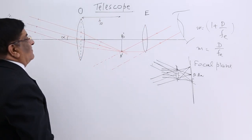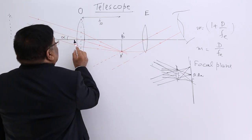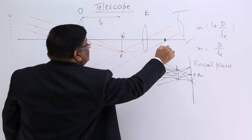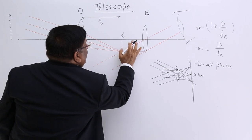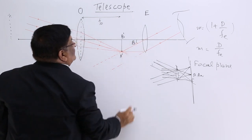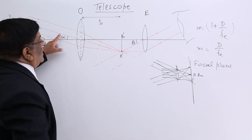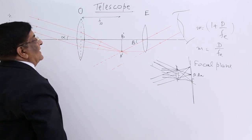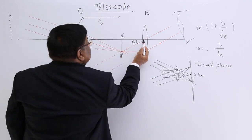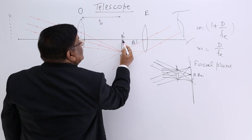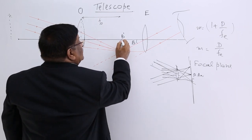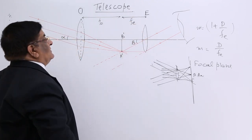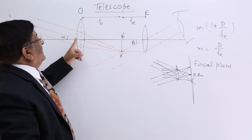Now, the angle subtended by the same image on our eyes — one ray comes from the bottom of the object and goes to our eyes, and this angle subtended by the image on the eyes we call beta. If beta is larger than alpha, then there is magnification, and we can see that beta is indeed larger than alpha. This is because the image is at the focal length of the eyepiece, so that the rays going out become parallel — the image must be at the focus of the eyepiece, that is focal length fe.